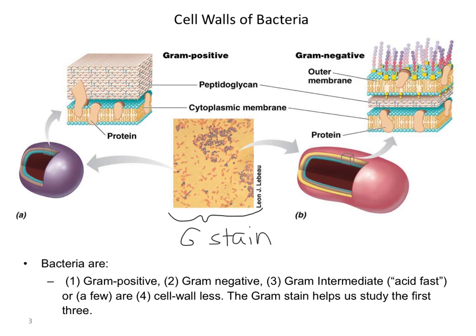The pinkish ones are gram-negative — for example, the E. coli you looked at the other day — and the purple ones are gram-positive. How do these look different?